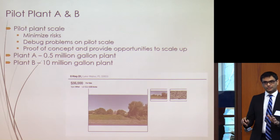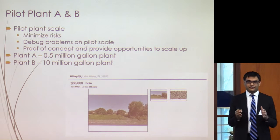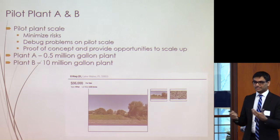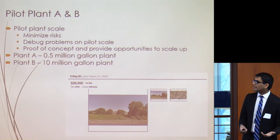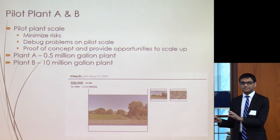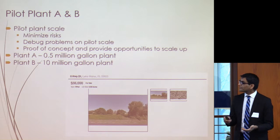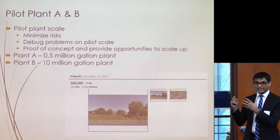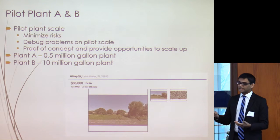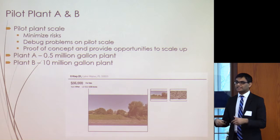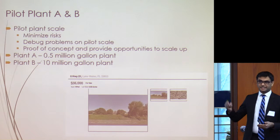What we are proposing is to use orange peel waste as a feedstock to produce bioethanol in a large-scale industrial process as a sustainable alternative to fossil fuels and food-based biofuels. We have a two-fold approach: Plant A is a pilot-scale plant of about 500,000 gallons. This minimizes risk, requires less capital investment, allows us to debug technical problems, and serves as a proof of concept before going commercial. Plant B is the commercial-scale 10 million gallon plant we'll scale up to after proving the technology at pilot scale. Throughout our presentation we will refer to them as Plant A and Plant B.